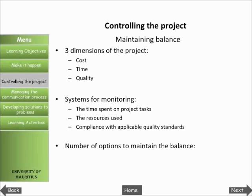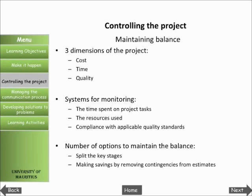There are a number of options for how you might take action to maintain this balance. These include: splitting the key stages to avoid each following another when there is no necessity to have one in place before the next; making savings by removing or reducing contingencies from estimates; and re-evaluating the dependencies in the logic diagram, as you may have been over-cautious in making the first judgments about the sequence of activities.